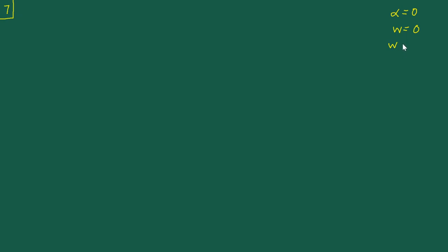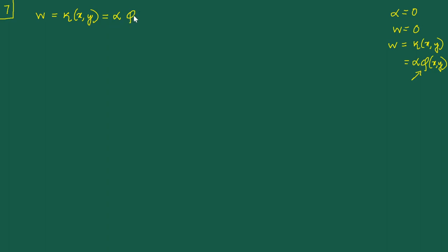The way we state this is that w, which we have already said equals kappa times the out-of-plane deflection, can be written as alpha times phi(x, y). This phi is what is referred to as the warping function.